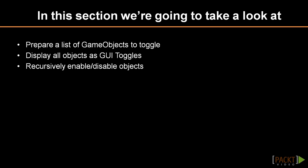We will first collect a list of objects that we want to toggle. Then a toggle box will be displayed as part of our user interface. And finally, we need to traverse the list of objects to effectively hide or show them on screen.